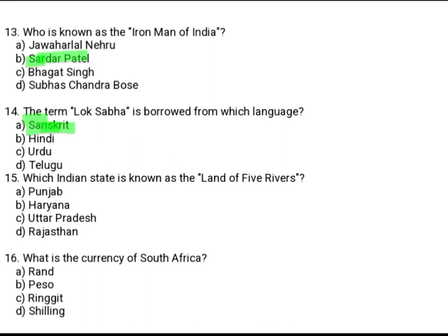Which Indian state is known as the Land of Five Rivers? Option A: Punjab. Option B: Haryana. Option C: Uttar Pradesh. Option D: Rajasthan. The correct option is Option A, Punjab.